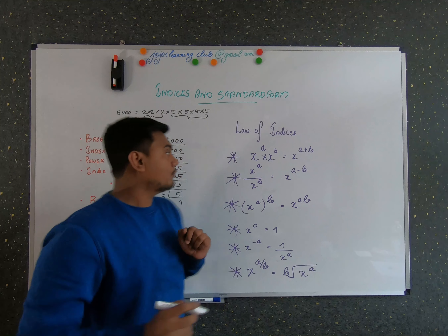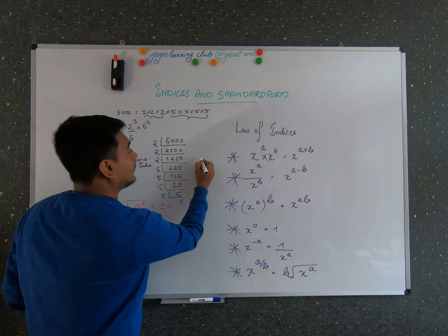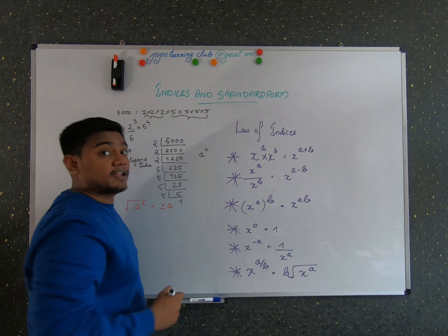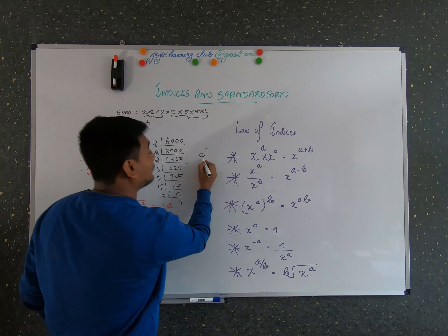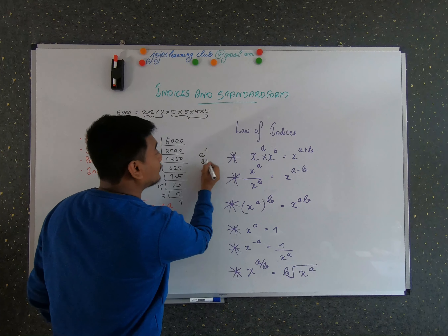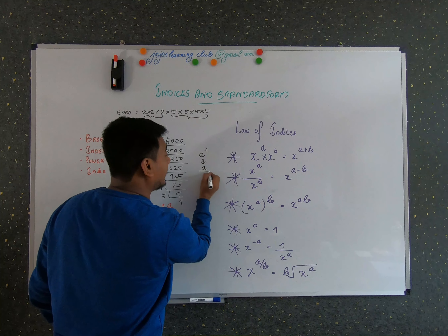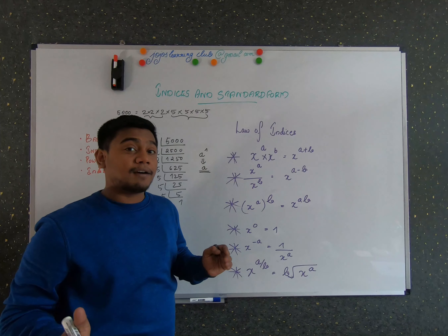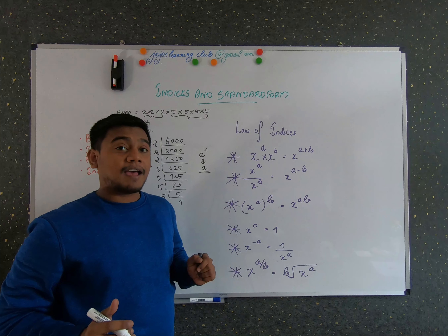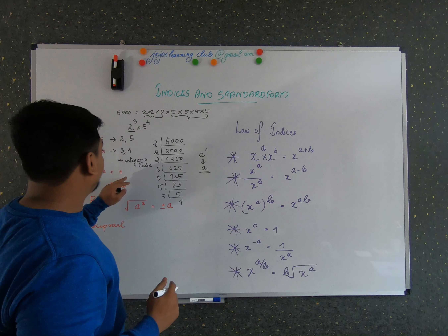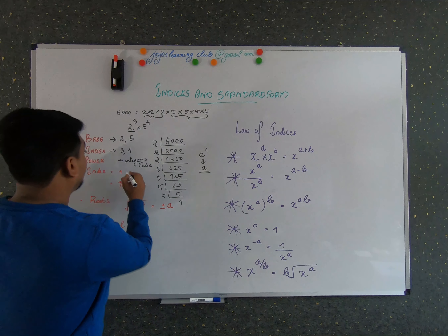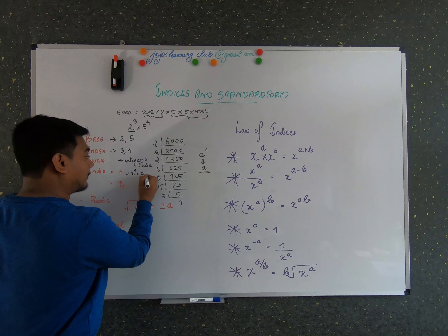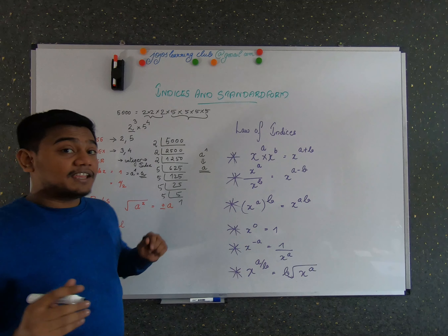When the index value is 1, for any number 'a' raised to the power of 1, it is nothing but 'a' itself. So a raised to 1 equals a — any number raised to the power of 1 is the same as that number itself.